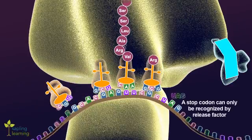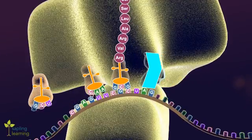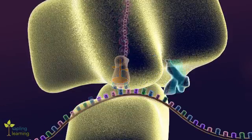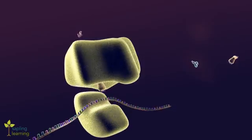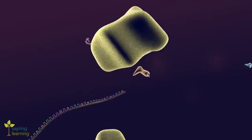A release factor recognizes the stop codon. Once inside the ribosome, the release factor disconnects the polypeptide chain from the last tRNA and begins the termination process. The ribosome complex disassembles and the polypeptide chain is released.